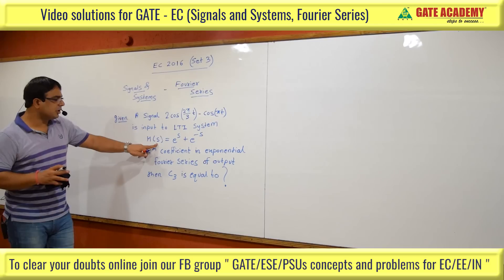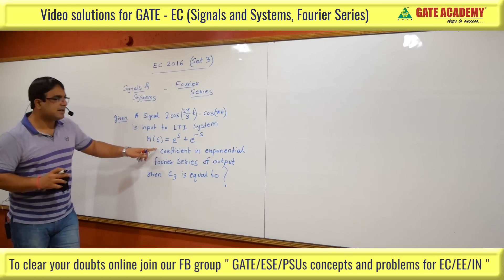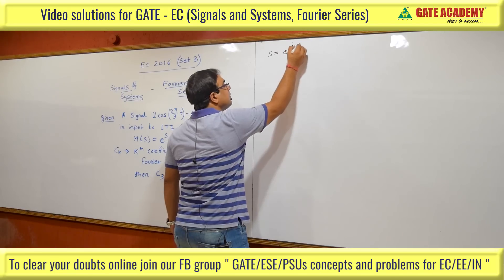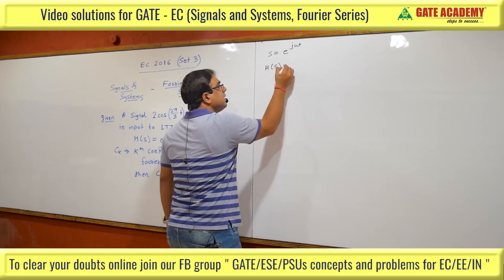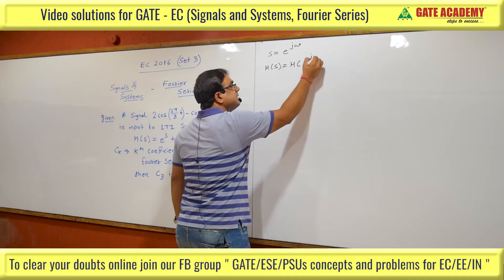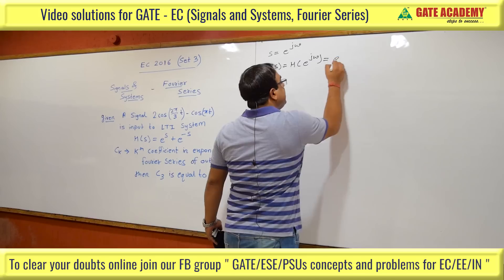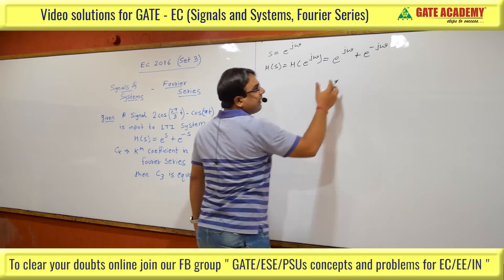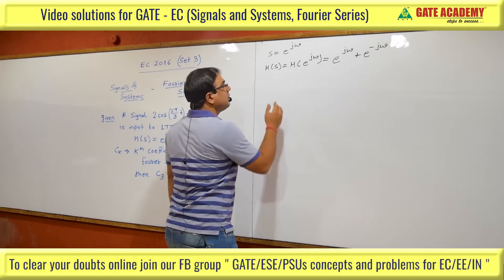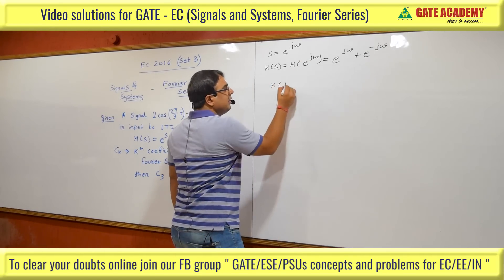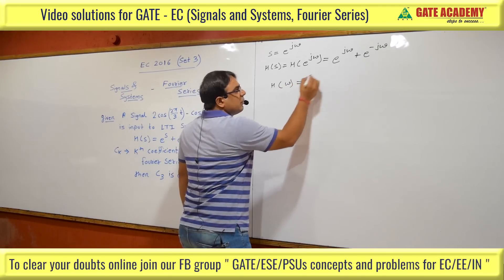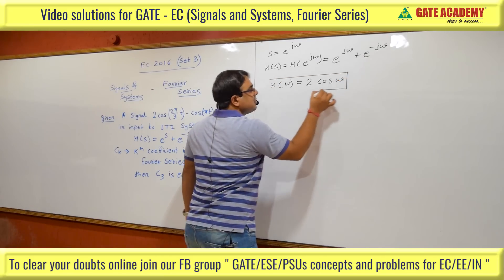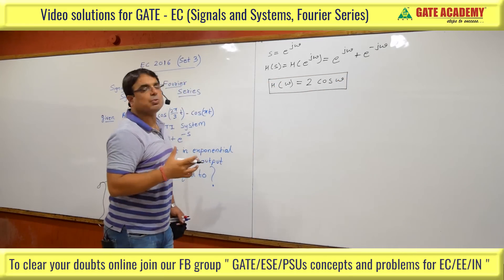First, we convert the transfer function to the frequency domain. H(s) with s = e^(jω) gives H(e^(jω)) = e^(jω) + e^(-jω). Multiplying and dividing by 2, this equals 2cos(ω). So H(ω) = 2cos(ω). The transfer function has been converted to a frequency response.